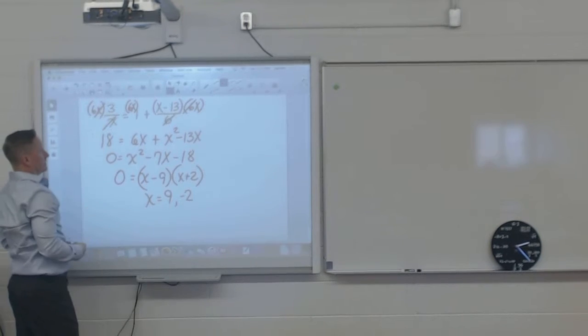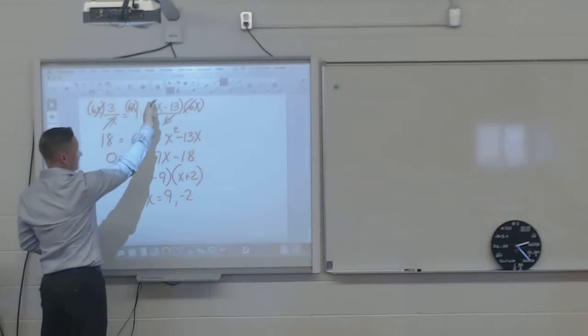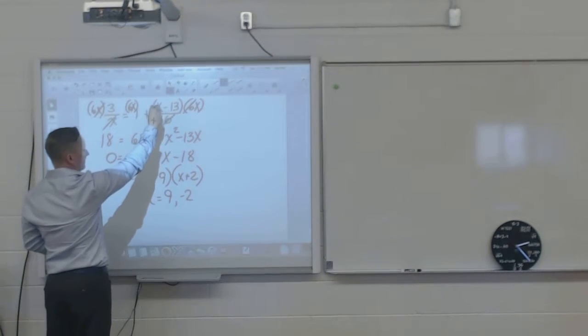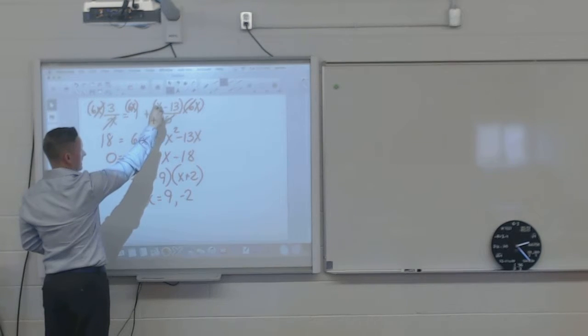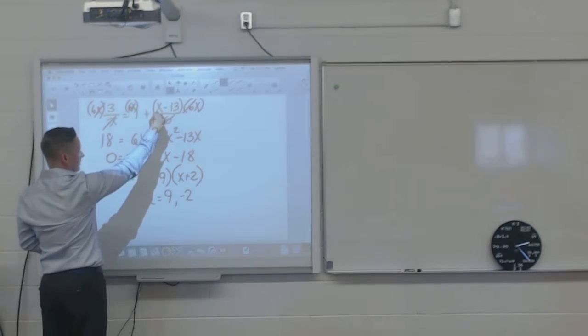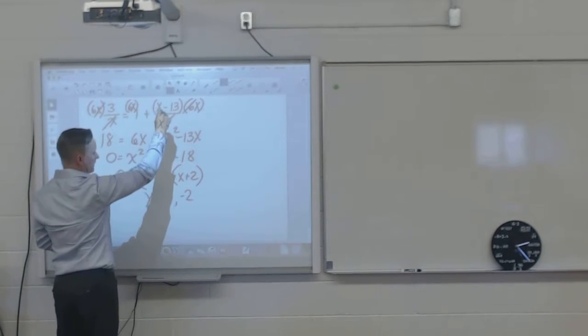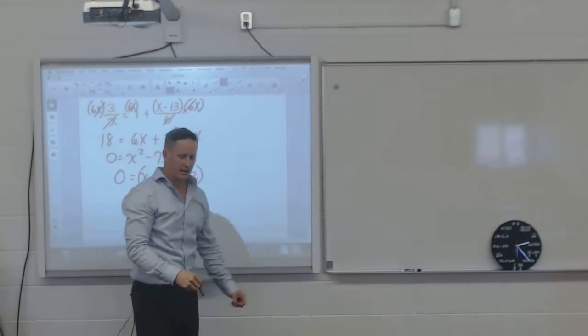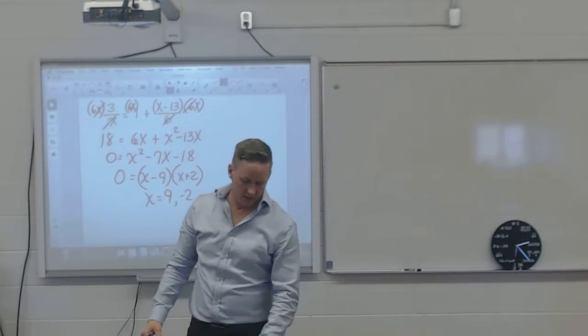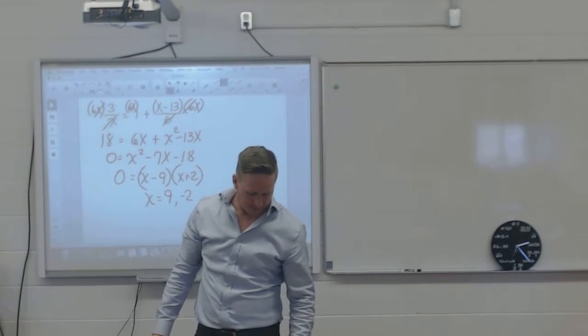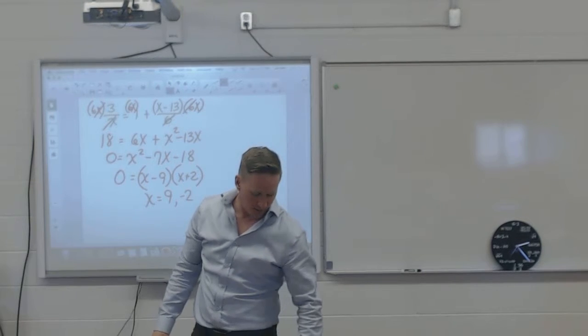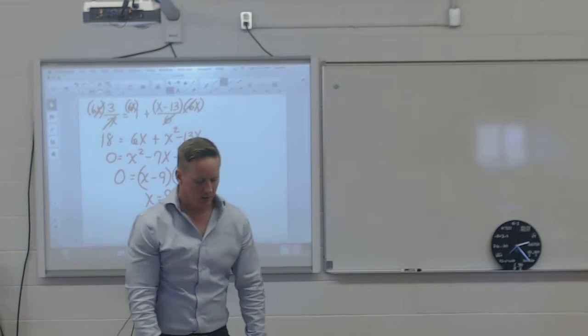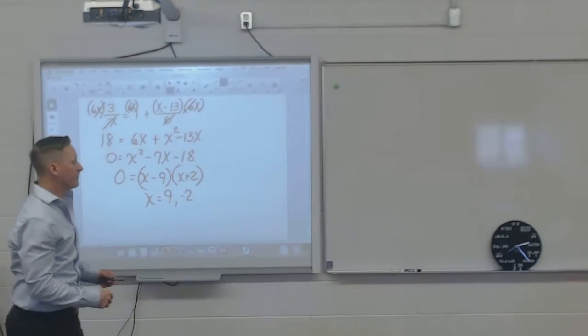3 over 9 is a third. 1 plus, and then, so that would be 9 subtract 13, negative 4. Negative 4 over that is negative 2 thirds. 1 subtract 2 thirds is a third. It works. Negative 2, plug it in, works as well. So that's basically all there is to it.